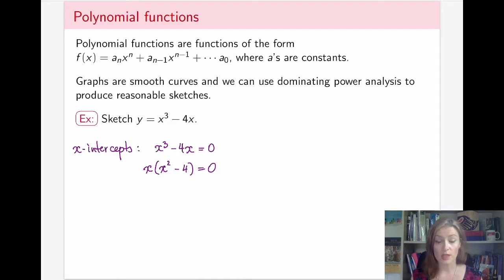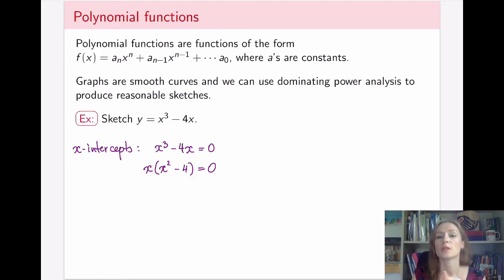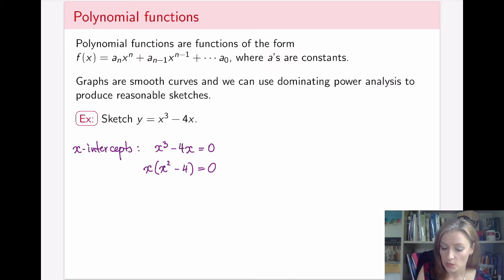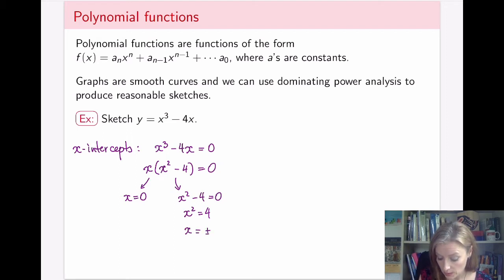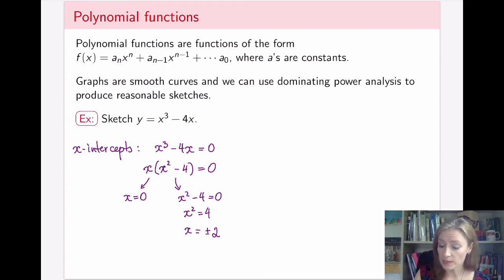The nice thing about factoring is that with 0 on the other side, we have a product of two things equal to 0. The only way to multiply two numbers and get 0 is if one of them was 0. So either x equals 0, or x squared minus 4 equals 0, which gives x squared equals 4. Don't forget the negative root: x equals plus or minus 2. Once you have some points, it's best to put them on the graph right away.